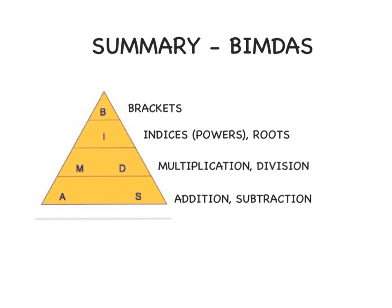So to summarise: our triangle gives us BIMDAS — B for brackets, I for indices, powers and roots, M and D for multiplication and division. Remember they are equally the same level, so we do them left to right, whatever is first. Then the same for addition and subtraction. It might be a bit complicated, but we are going to do more questions in class. For homework, you need to learn these words by heart, know what each letter stands for and which operation goes first, and complete activity number 1 — you can find it in the homework folder. See you tomorrow. Thank you.